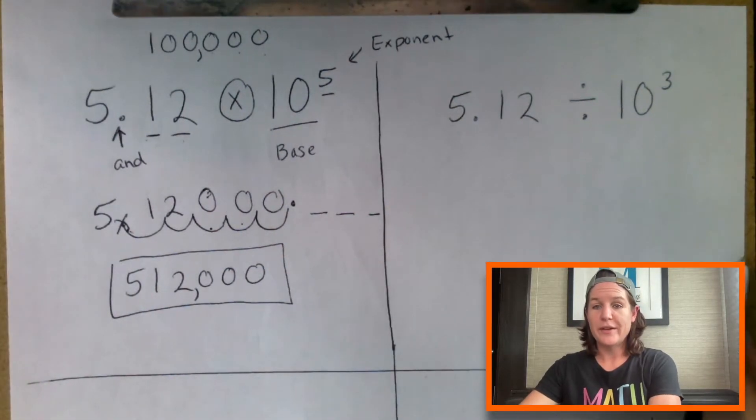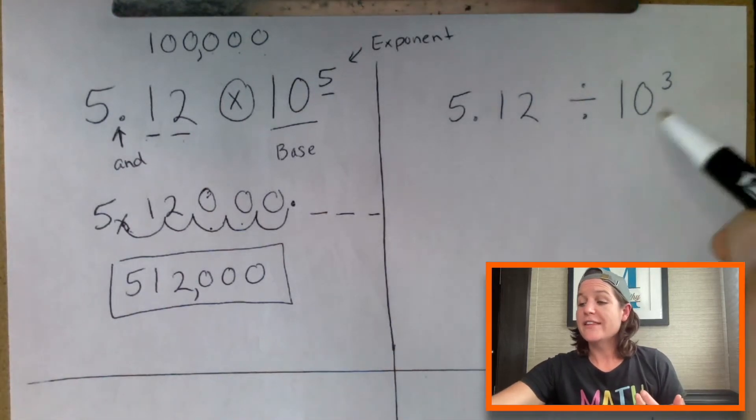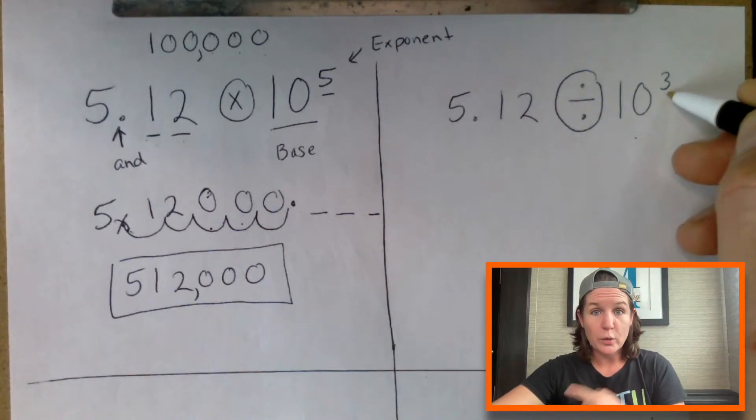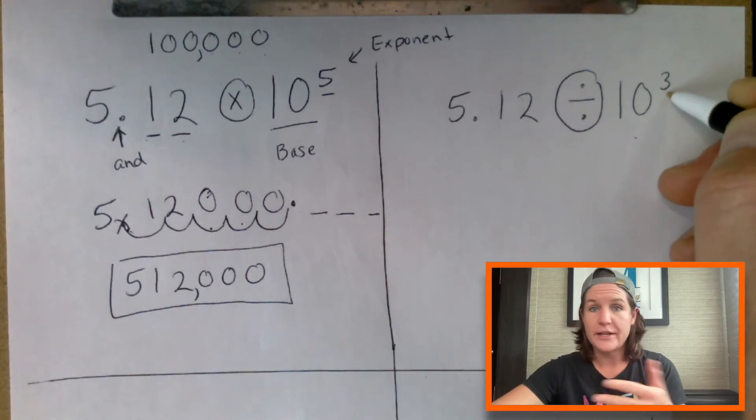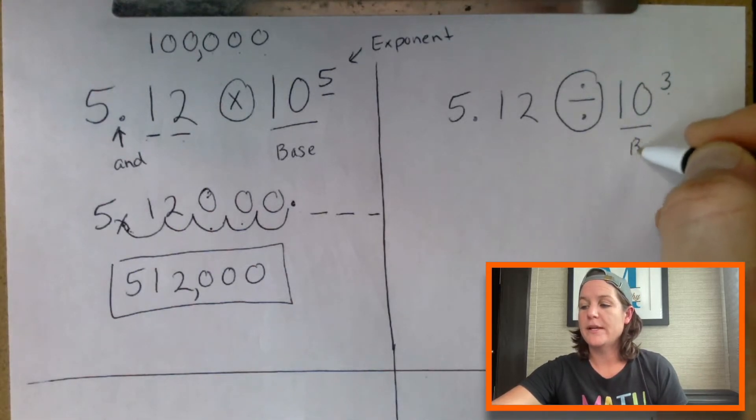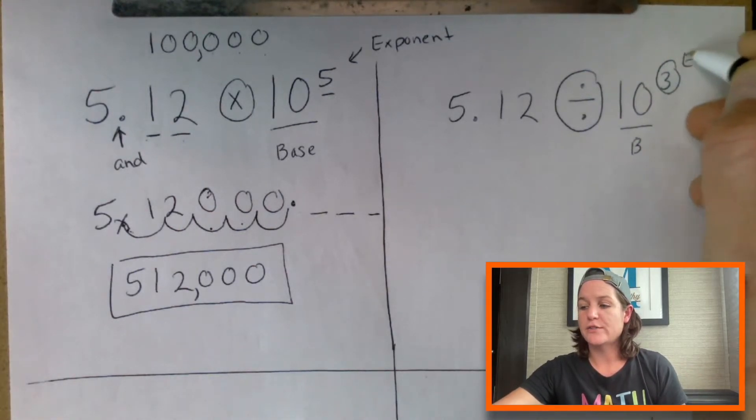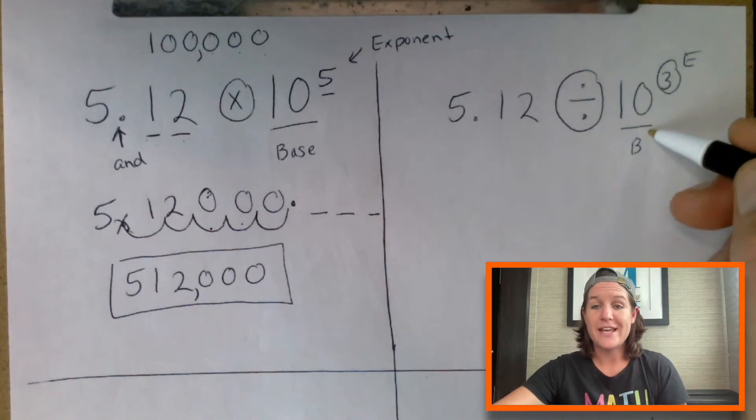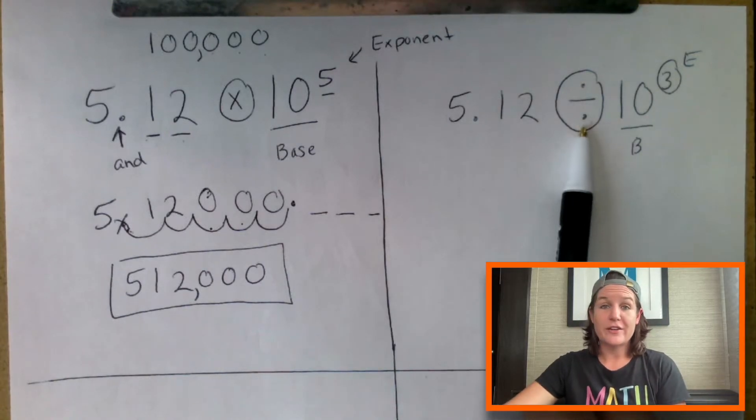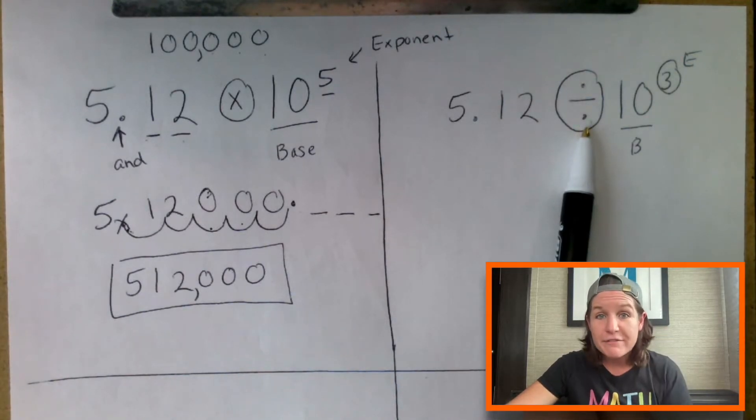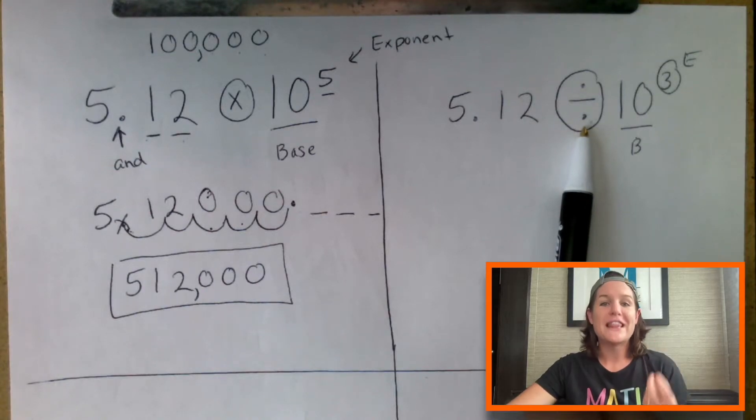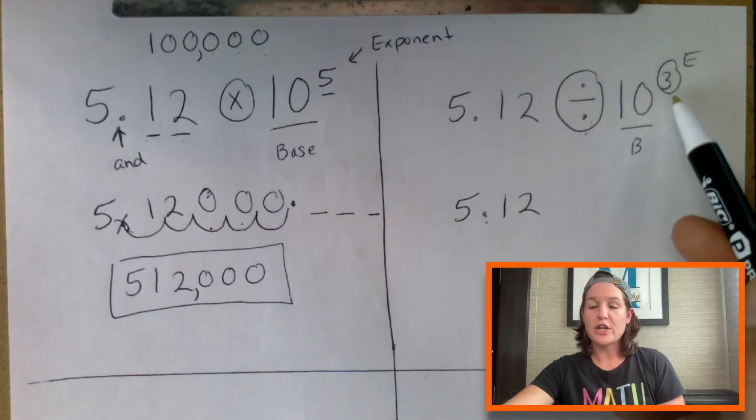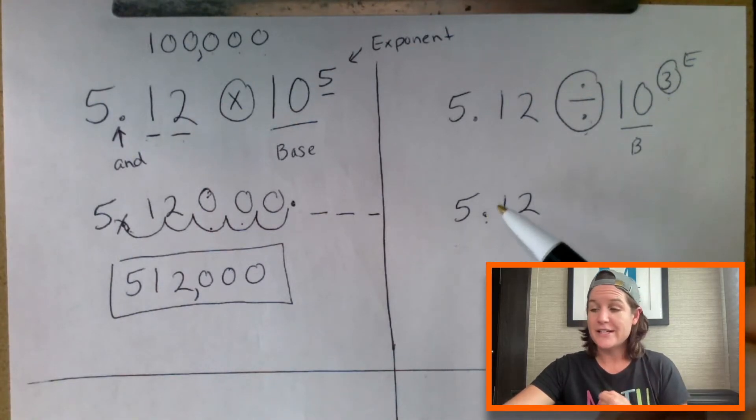Let's go to the next one. We have the same number, five and 12 hundredths. And this time we are dividing by 10 to the third power or 10 to the power of three. Again, 10 is our base, three is our exponent. Three also stands for the number of jumps because we have a base of 10. Because we are dividing here, that means that we're going to shift our decimal to the left to make the value less.